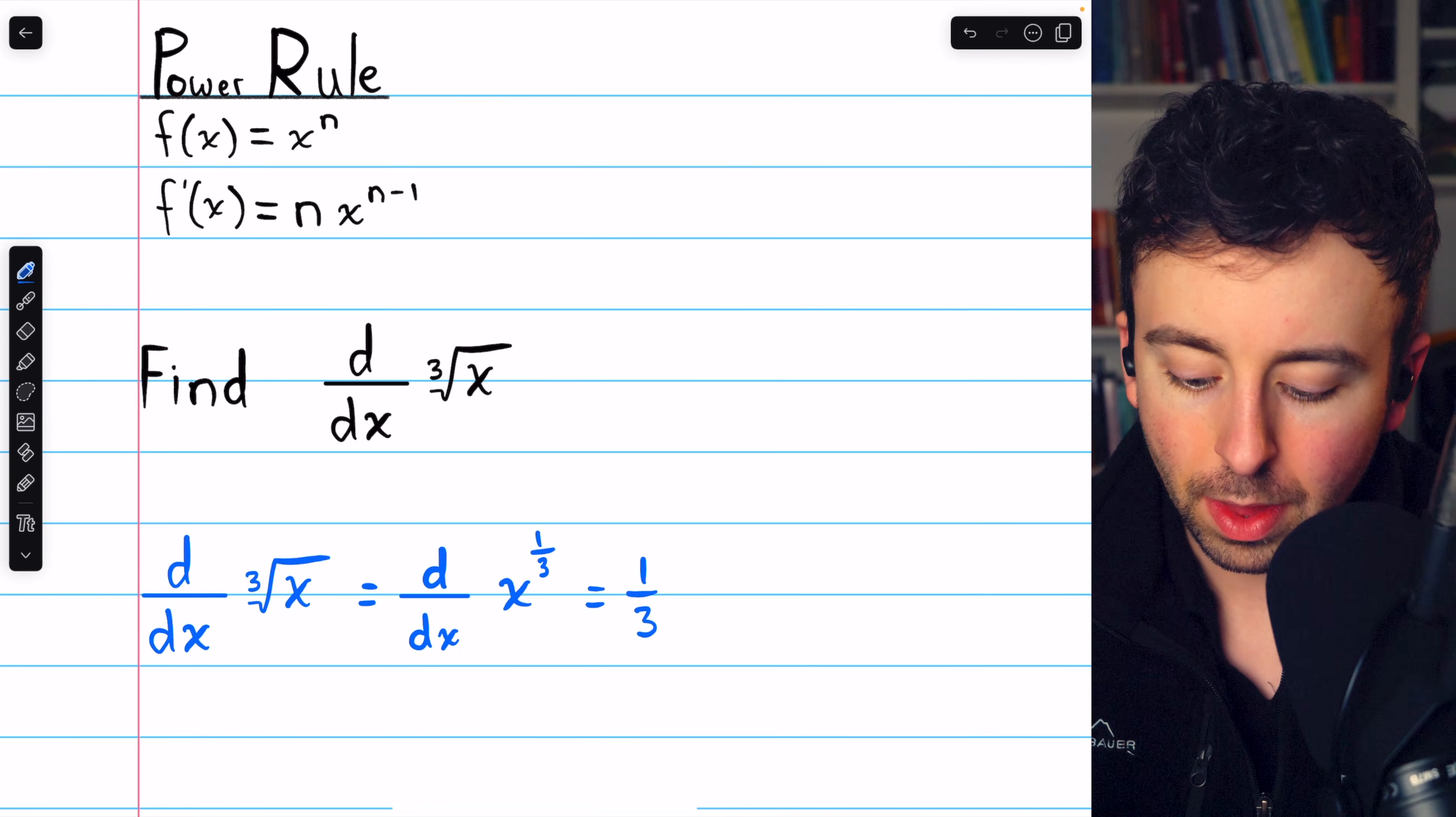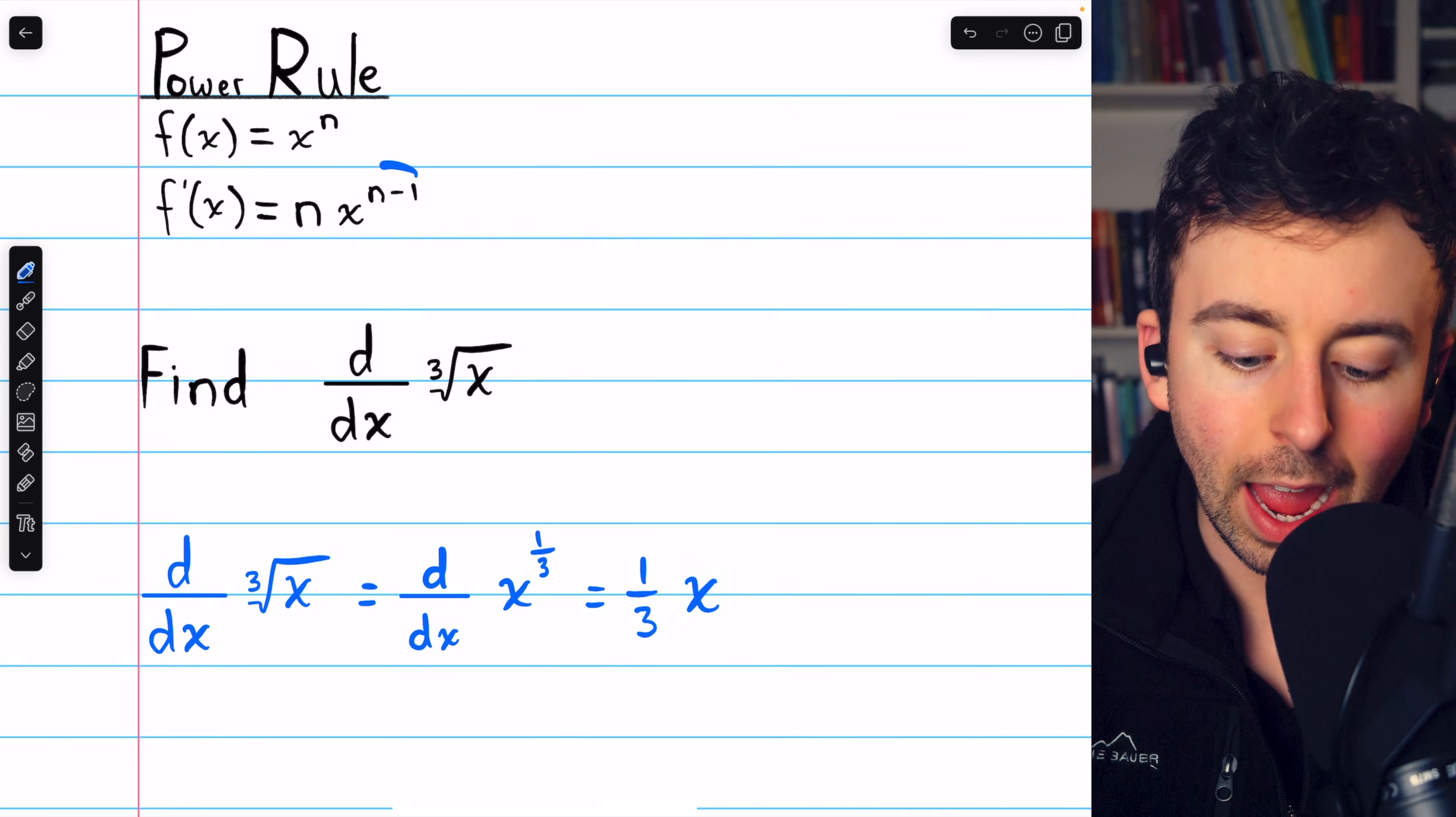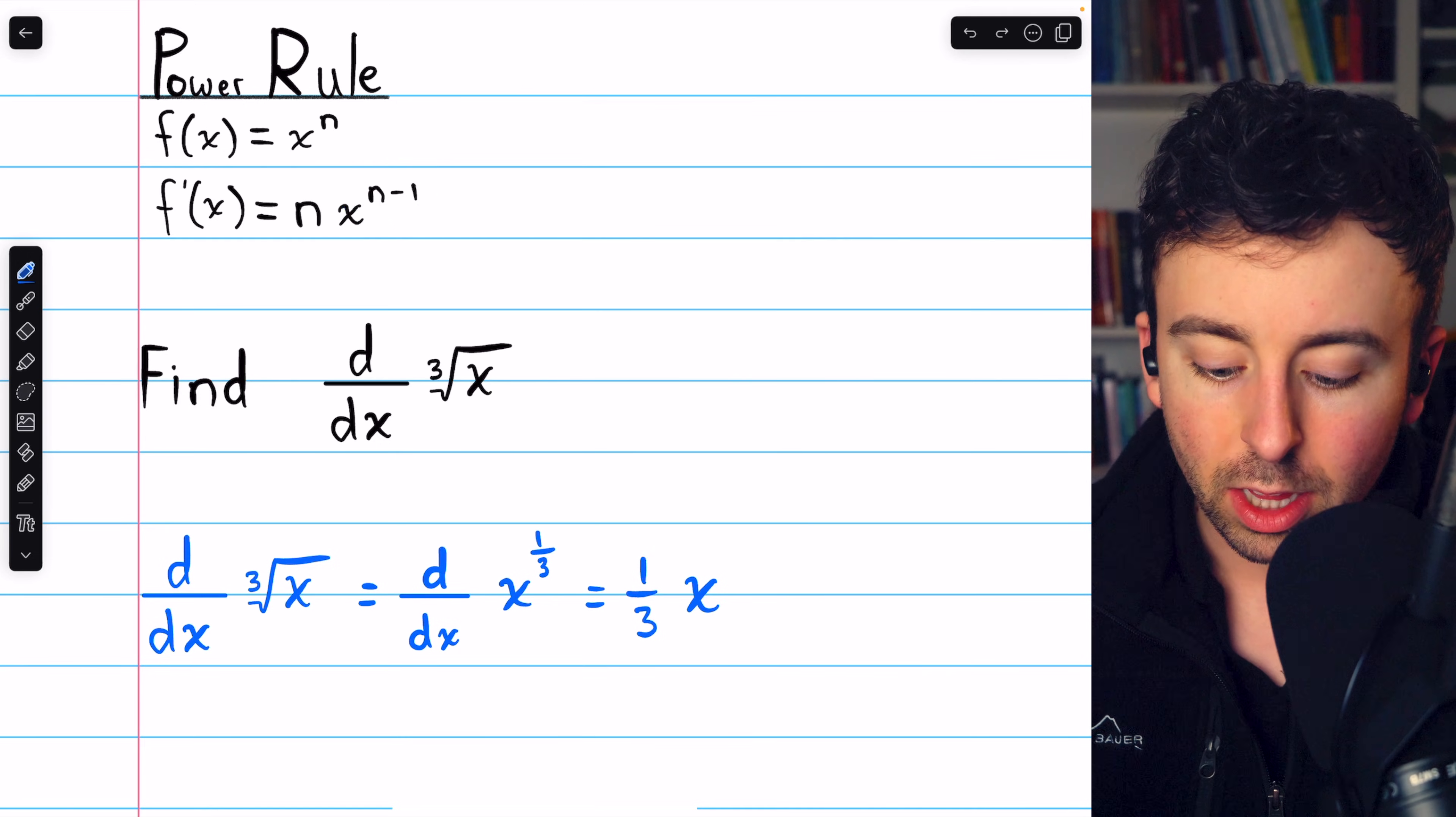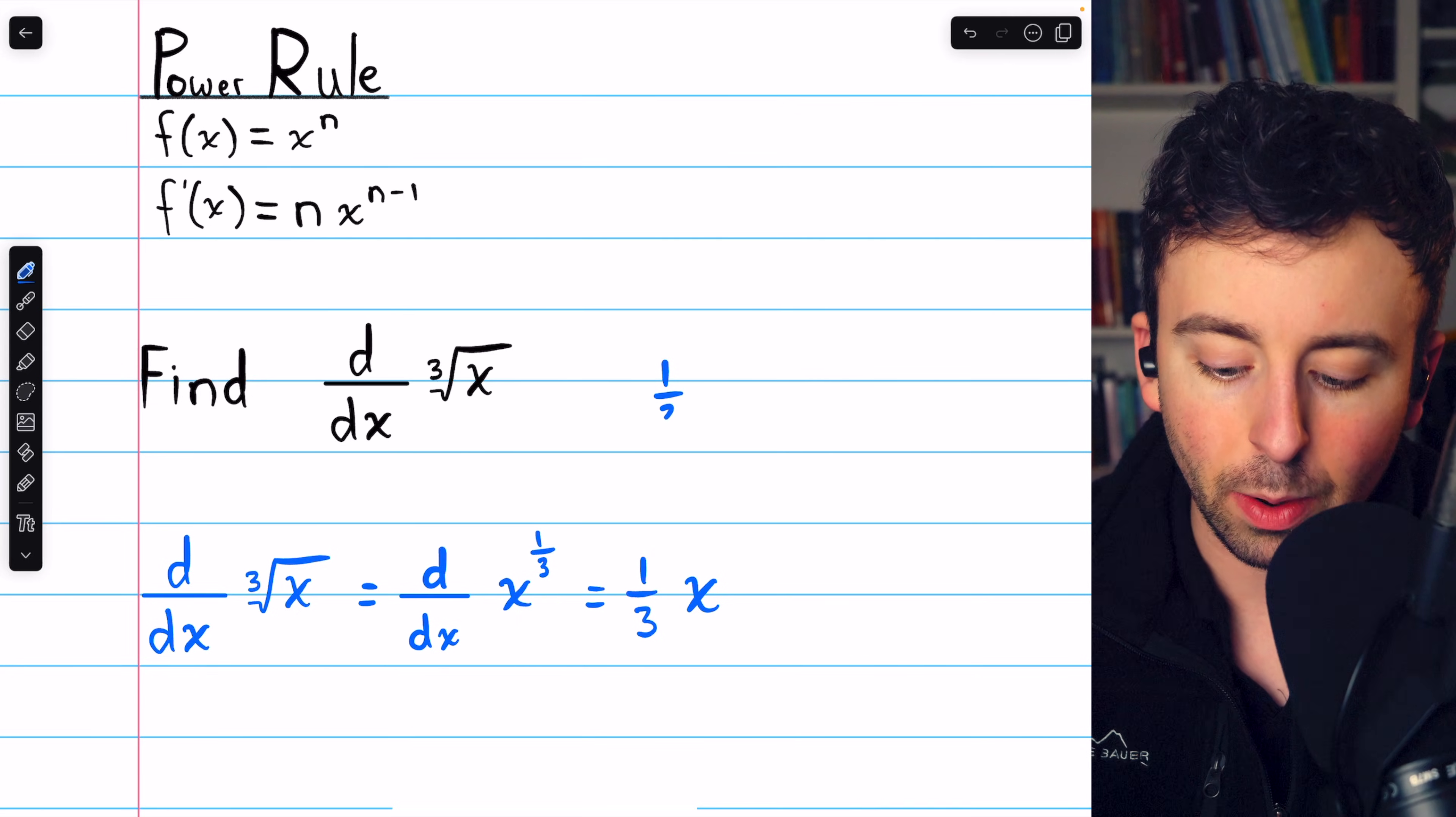so we have one-third multiplied by x to the power of, and we need to subtract one from the power. The power was one-third, we need to subtract one, so the new power will be one-third minus one,